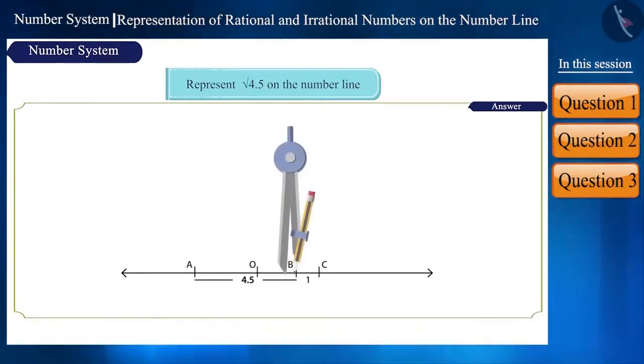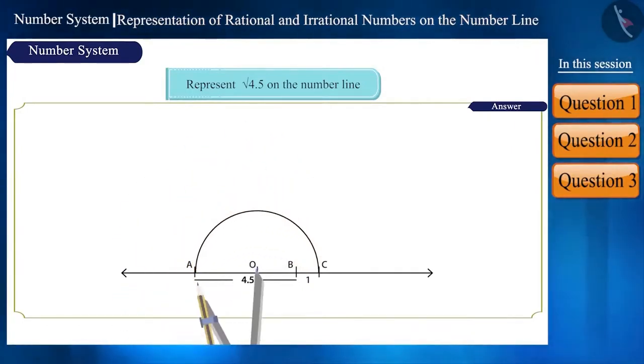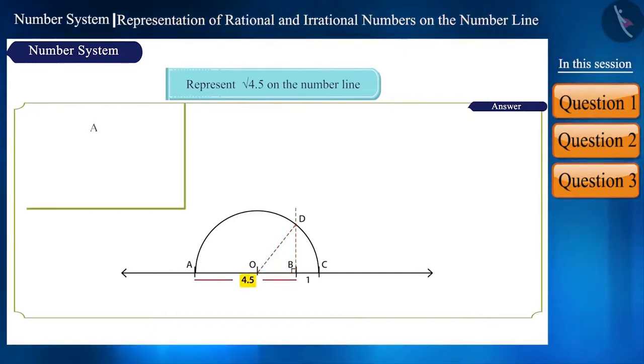Now, taking O as the center, draw a semicircle using a compass. Draw a perpendicular from line AC at point B which would cut the semicircle at point D. On joining O and D, we will get a right angle triangle OBD. We know the length of AB is 4.5 and OA is 2.75. We will get OB as 1.75.